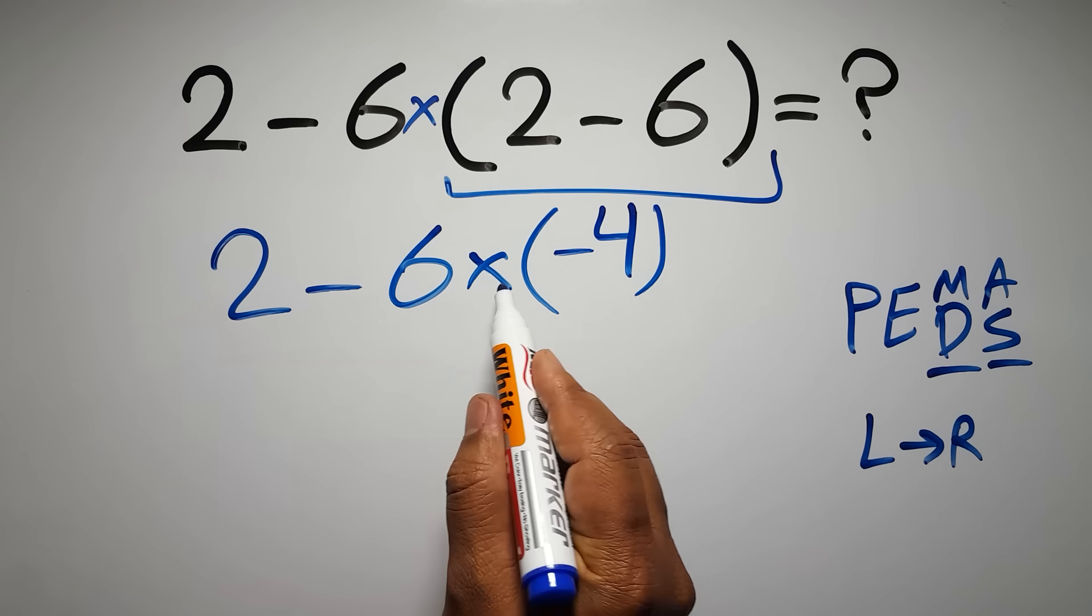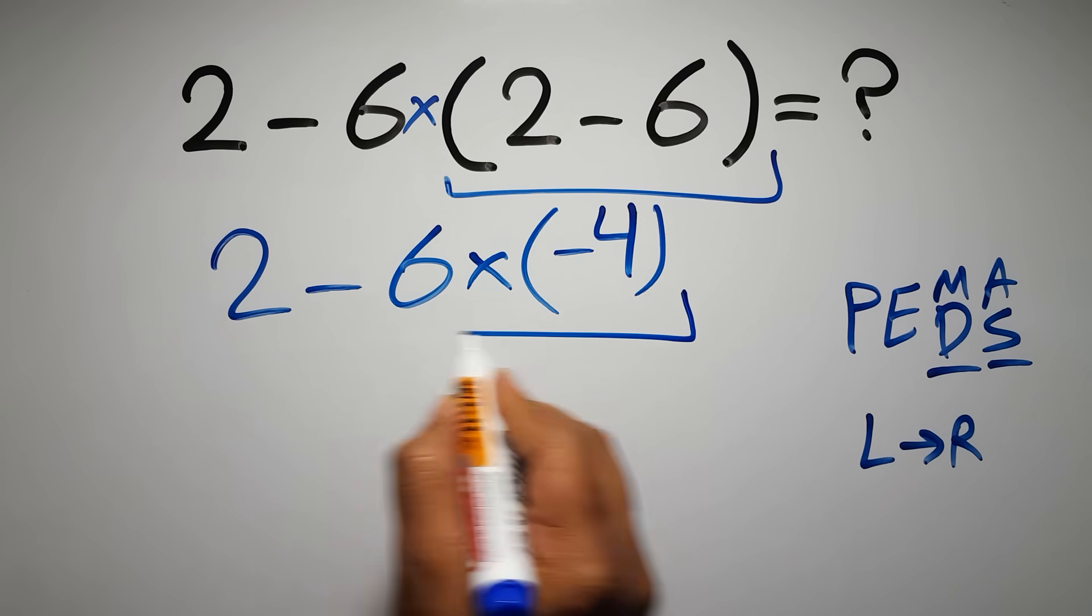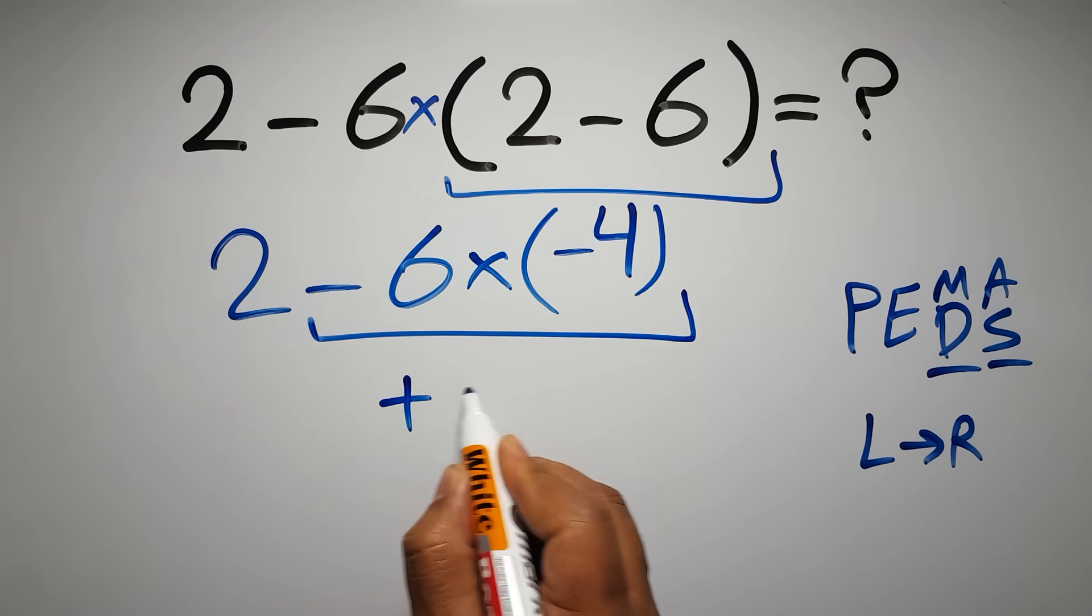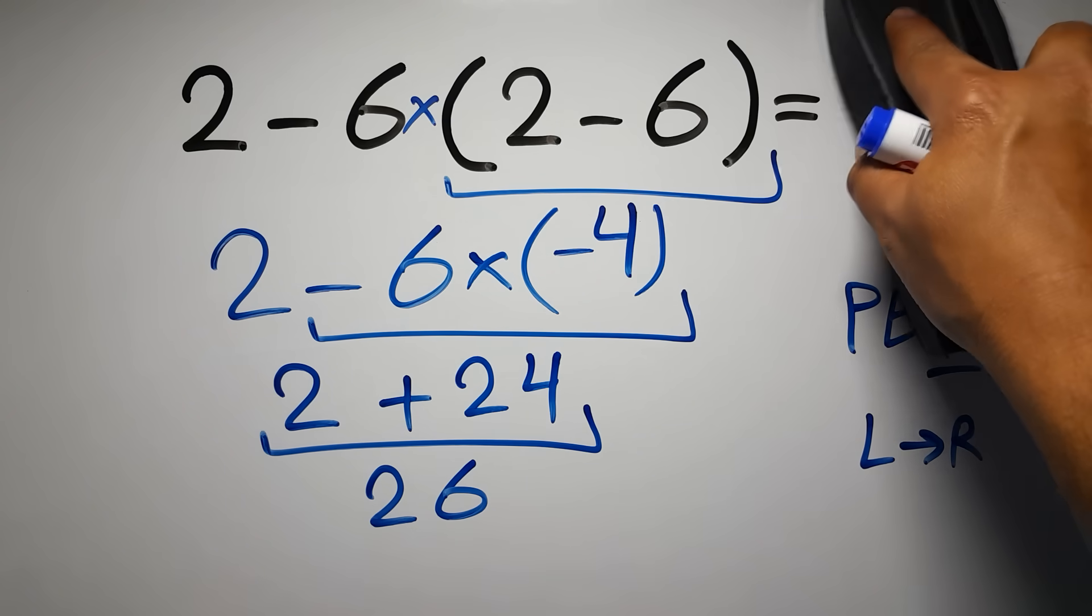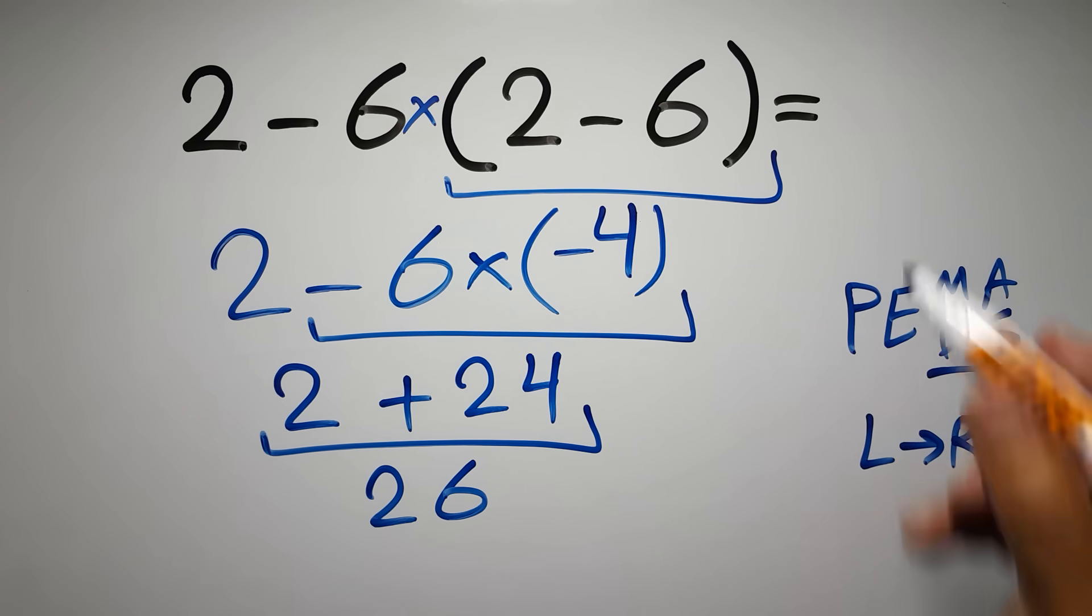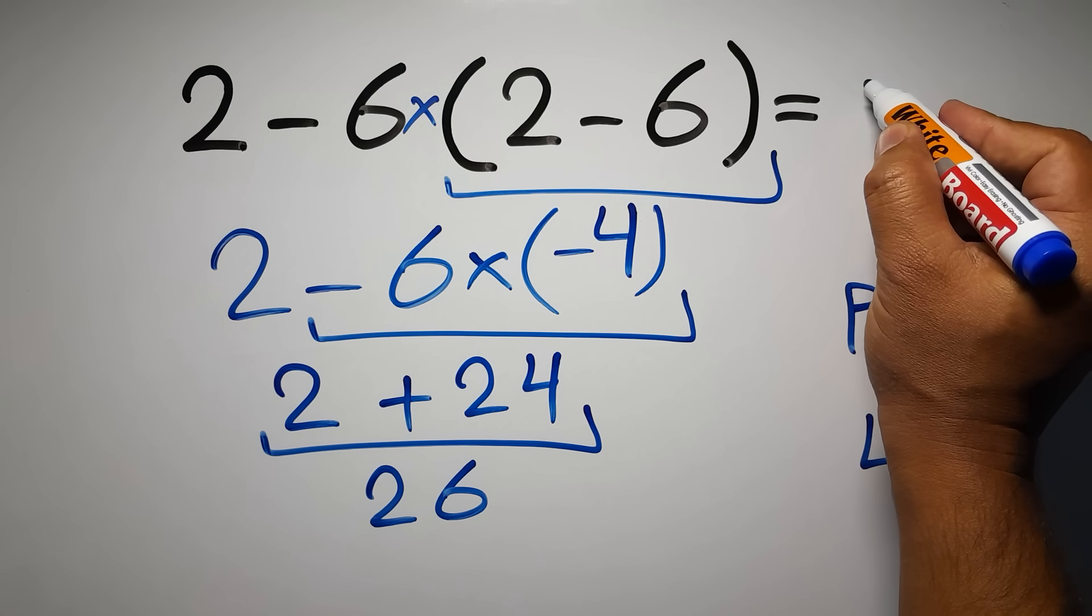So negative 6 times negative 4 gives us positive 24, so we have 2 plus 24, which equals 26. And this is our final answer to this problem. The correct answer is 26.